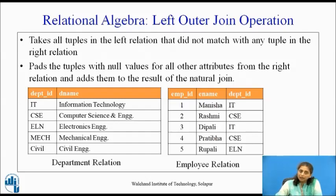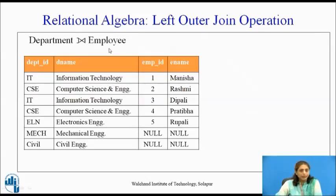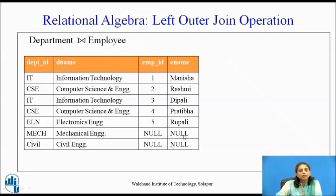Left outer join takes all tuples of the left relation that do not match any tuple in the right relation, pairs them with null values for all attributes in the right relation, and adds the result to the natural join. For example, department left outer join employee: the natural join results are included, and mechanical and civil — which have no employees — are padded with nulls. This is the result of left outer join.